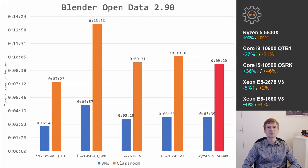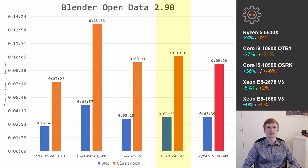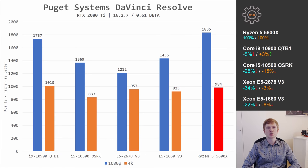In the Blender benchmark using BMW and Classroom scenes: the Core i9-10900 QTB1 completed benchmarks 27% and 21% faster than the Ryzen 5 5600X. The Core i5-10500 with the same 6 cores was 36% and 46% slower. The Xeon E5-2678v3 produces very similar results to the Ryzen 5 — winning 5% in BMW and losing 2% in Classroom. The Xeon E5-1660v3 is also very close to the Ryzen 5 5600X.